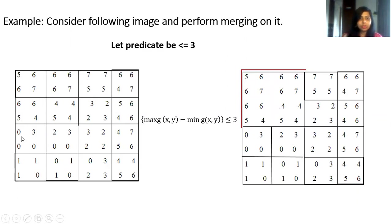Now let us go for these 4 squares. In this maximum intensity is 3. Minimum intensity is 0. Again, what is the difference? 3 minus 0 is 3. Which is less than or equal to 3. That means it satisfies the criteria. And hence we will merge these 4 regions like this.